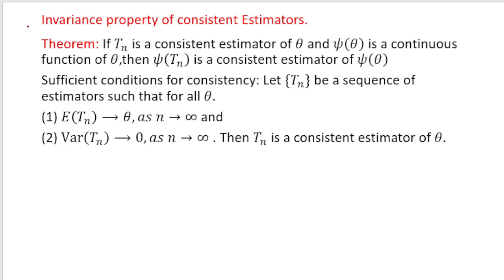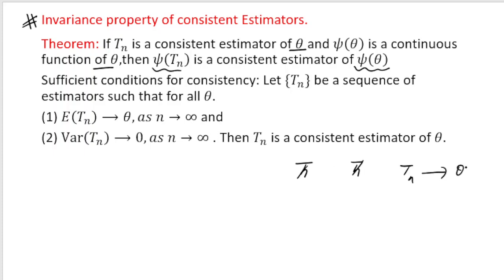Now this is a very very important property, and we will be solving problems using this important characteristic of the consistent estimator. This is known as the invariance property of the consistent estimator. What is this invariance property? If Tn is a consistent estimator of theta and psi(theta) is a continuous function of theta, then psi(Tn) is a consistent estimator of psi(theta).